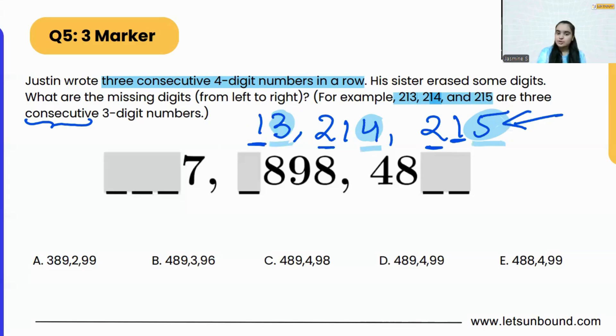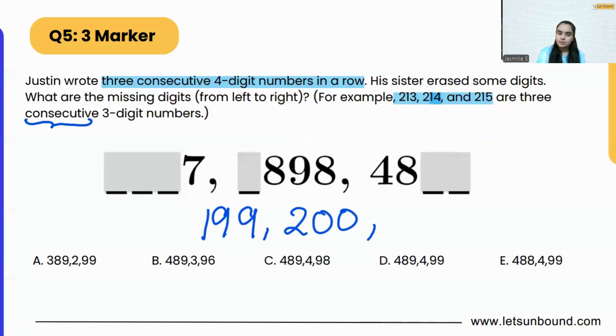So this is what we are going to apply in our question as well. In consecutive numbers, most of the time, the ones place will change. But sometimes the 10th place or 100th place can also change. And that will happen only if the number is like this: 199, 200, 201.